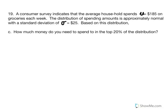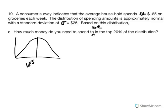Now, using the same grocery spending parameters, how much does one need to spend to be in the top 20% of the distribution? We're solving for X, where $185 is the average and we want the X value that partitions the top 20%. We use the equation X equals mu plus standard deviation multiplied by Z.